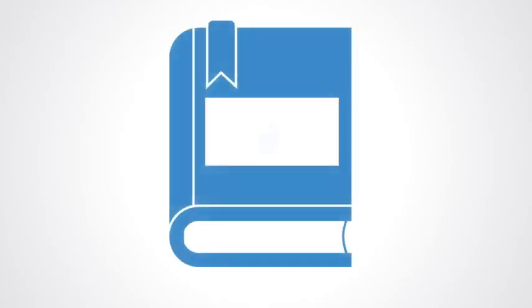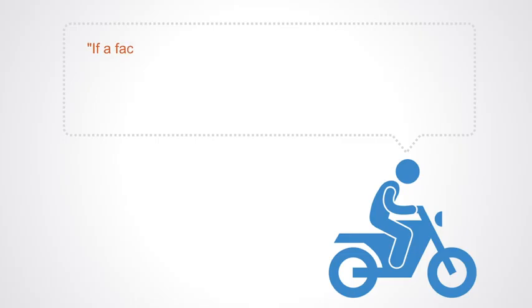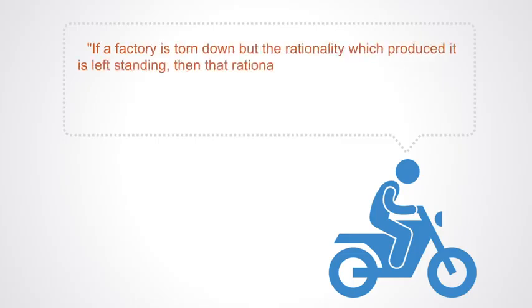Almost 50 years ago, Robert Persig in his famous book Zen and the Art of Motorcycle Maintenance had something important to add to our understanding of systems change, when he wrote: If a factory is torn down, but the rationality which produced it is left standing, then that rationality will simply produce another factory.